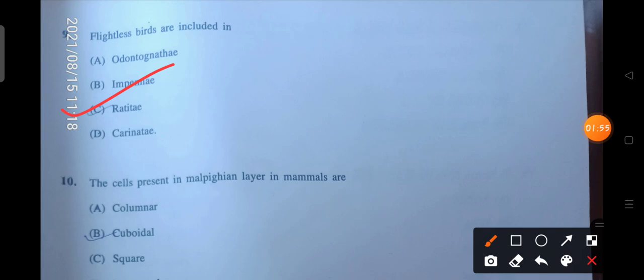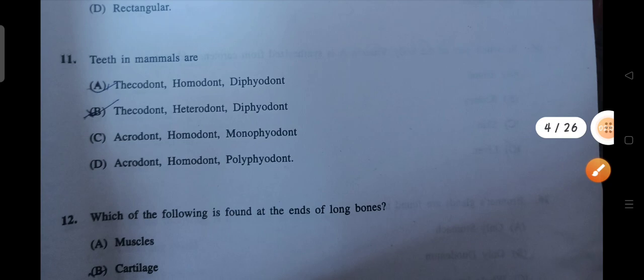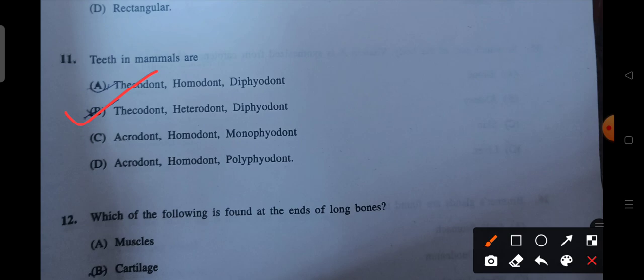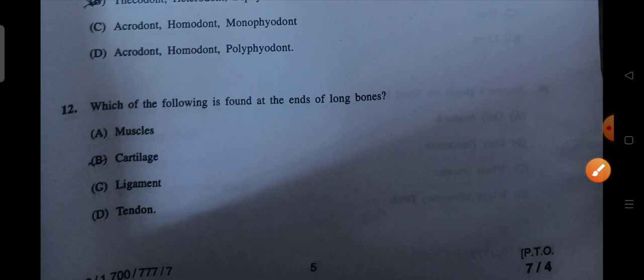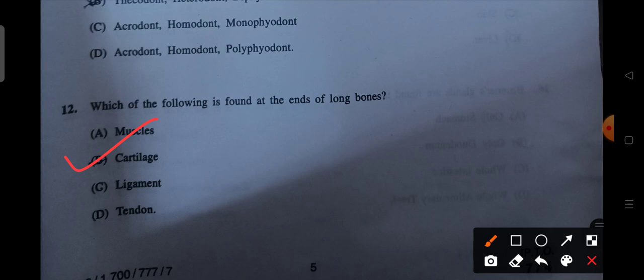Next is the cells present in multiplex layer of mammals are. So A will be the correct answer. Next is teeth in mammals are. B will be the correct answer. Next is which of the following is found at the ends of long bones? So what are found in your long bones and cartilages? B will be the correct answer.